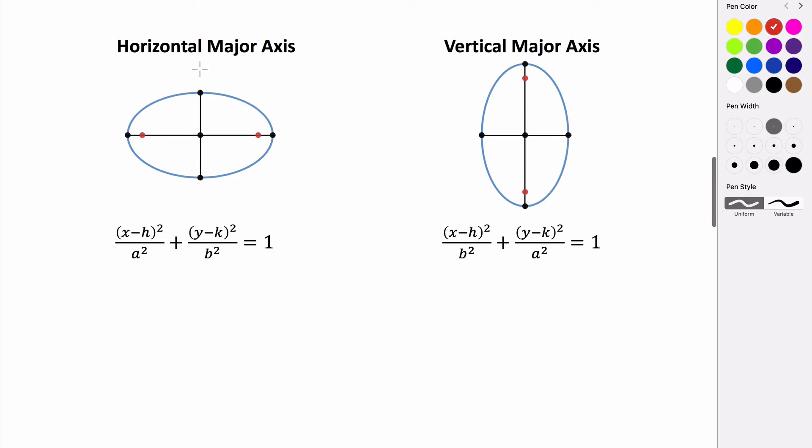If our ellipse has a major axis that is horizontal, meaning the longer of the two axes is horizontal, that means that the value of a, because remember a is greater than b, always, a is greater than b. That means that the value of a is going to be in the denominator of our x quantity that's being squared, and then our smaller value will be under the quantity of y being squared.